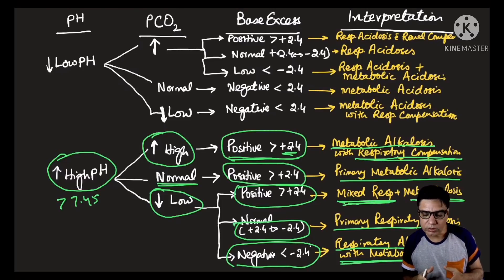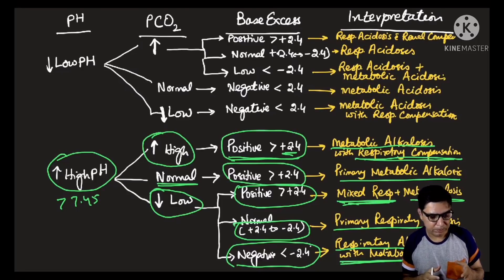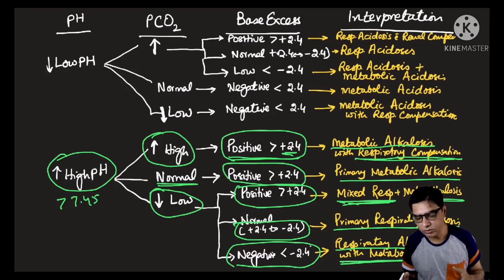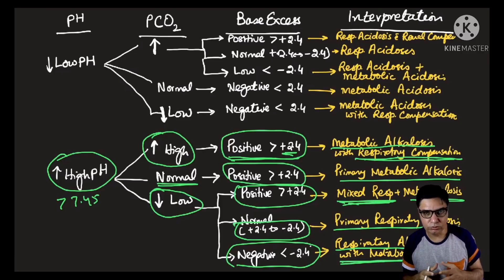In summary, you can use the base excess to determine whether somebody has a respiratory or metabolic problem, in terms of acidosis or alkalosis. It also tells you about compensation — whether it's an acute uncompensated state or a chronic compensated one — and it helps pick up dual disorders involving combined metabolic and respiratory acidosis or alkalosis. Normal values for base excess or deficit are between plus 2.4 and minus 2.4, though some references use plus/minus 2 or 2.2. Follow the reference values on your machine.